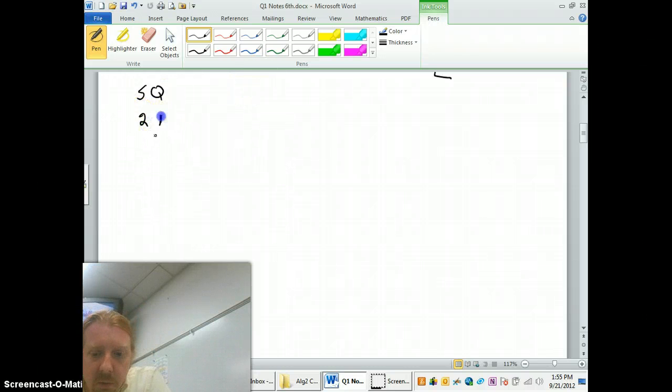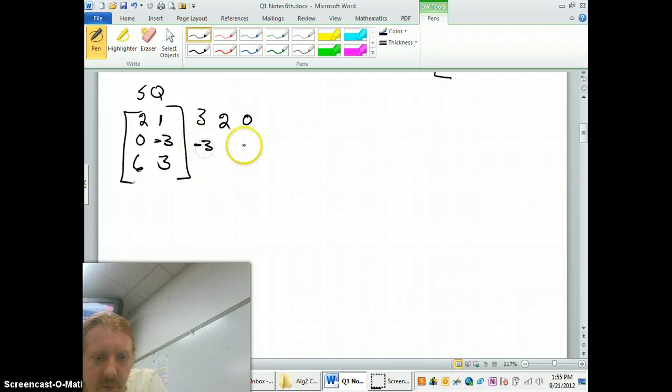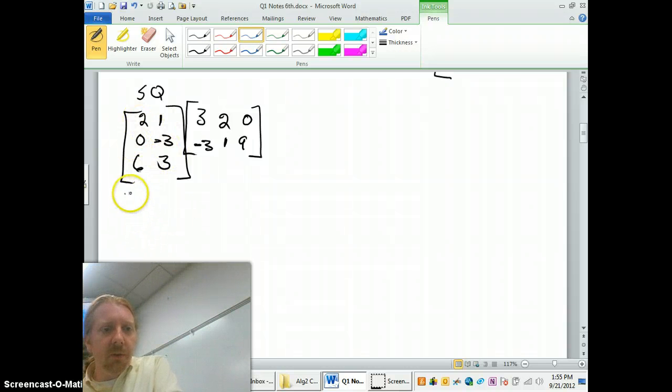S is 2, 1, 0, negative 3, 6, 3. That's my S matrix. Q is 3, 2, 0, negative 3, 1, 1, 9. First question should always be, can I multiply these two matrices together? Yes. Why? Three rows by two columns, and then two rows by three columns.